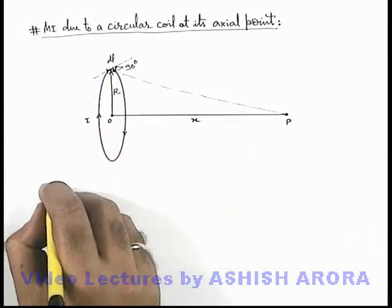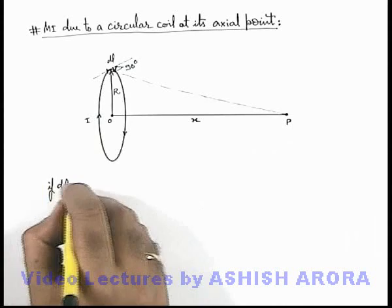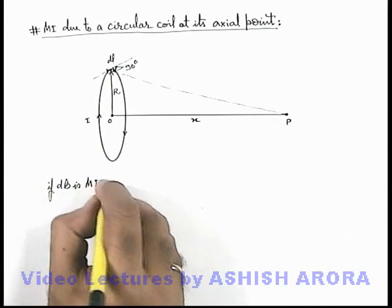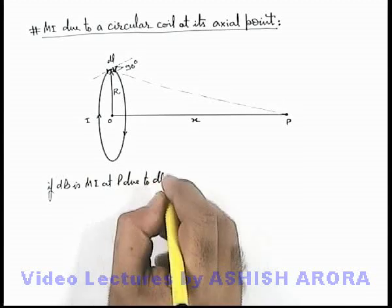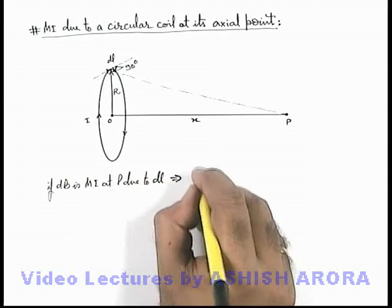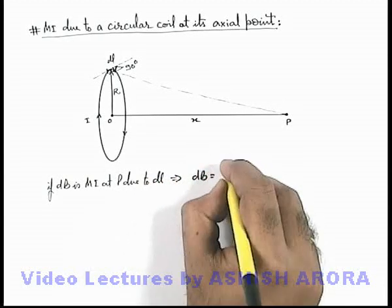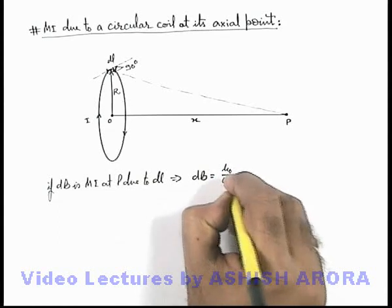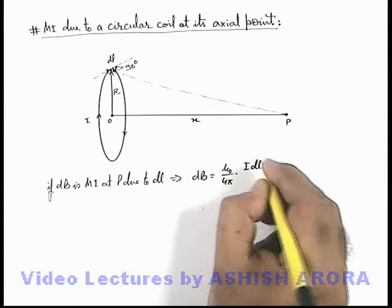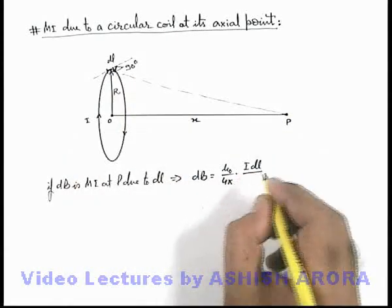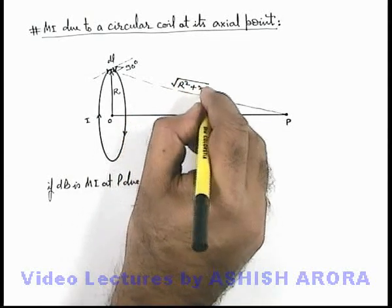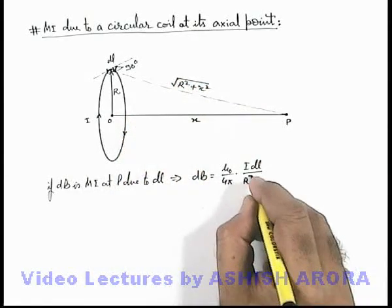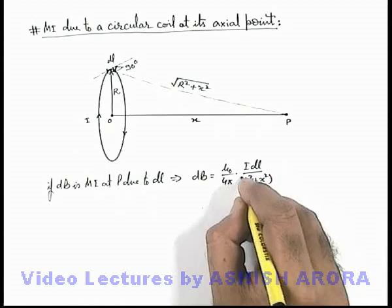So we can directly write if db is magnetic induction at p due to dl, this db can be given as mu not upon 4 pi i dl sine 90, which we can write as 1 divided by the distance square which is root of r square plus x square.